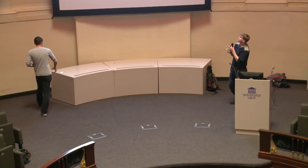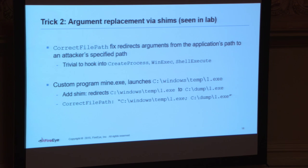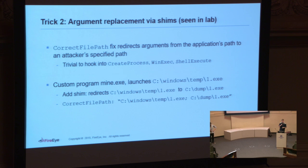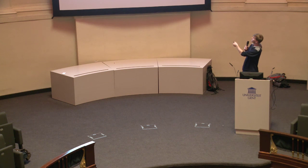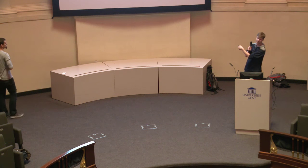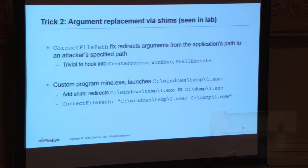I implemented this in the lab to see how long it takes to build these things — probably about 30 seconds to build and deploy one of these databases. I used the correct file path fix, which redirects arguments, and made mine.exe basically launch some other executable. So whenever mine.exe tries to call an executable, since I hooked the API, it now calls cdump1.exe instead. You can do this for INI files, bash scripts — essentially anything. It's hooking into the API and redirecting all these file paths.